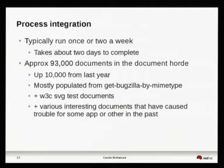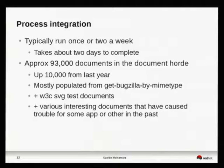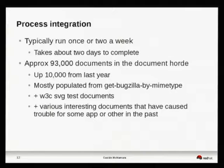This is run once or twice a week and takes about two days to complete. The number of documents at this stage is up to 93,000, which is up 10,000 on last year. 90% of them come from various Bugzillas — we have a script to download from those. This probably means that since last year, there have been 10,000 bugs logged with new documents attached in our Bugzilla, the Mozilla Bugzilla, the Red Hat one, and one or two others.